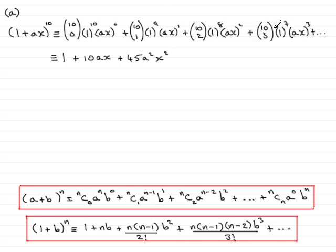And the final term, the fourth term, 10C3 comes out to 120 and you've got A cubed X cubed. So 120 A cubed X cubed. And again, don't forget, plus and so on. So that really is the expansion then. But that's done via this formula here.